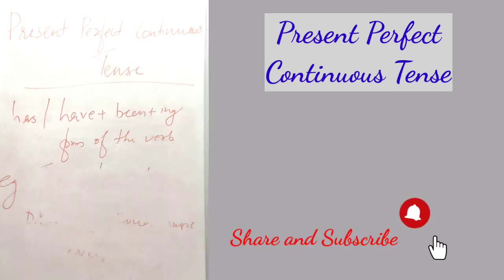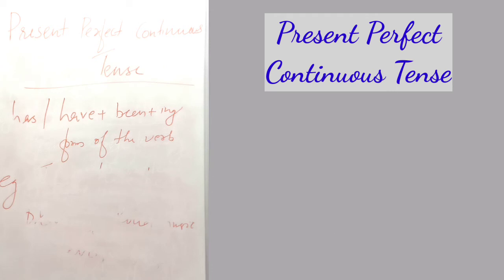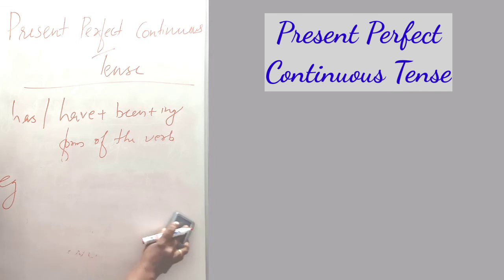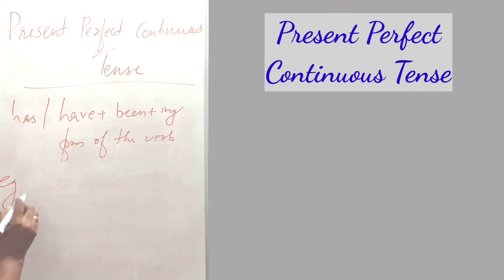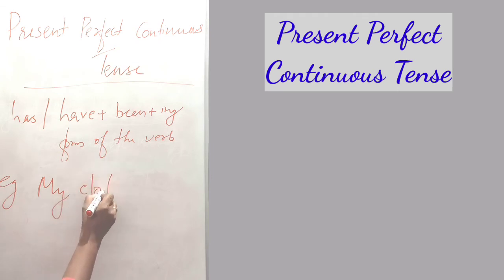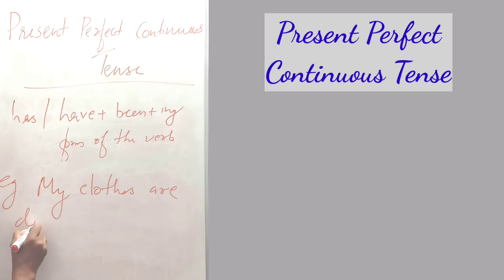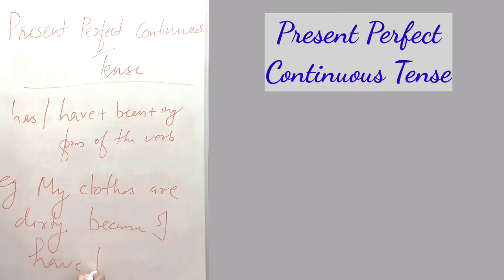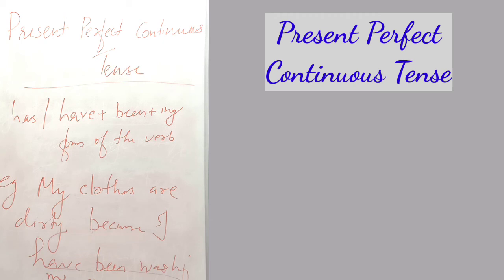Thirdly, it is used to express an action which began in the past and has just been completed, but whose result is still present. Example: My clothes are dirty because I have been washing my car. Another example: He is completely wet because he has been watering the plants.